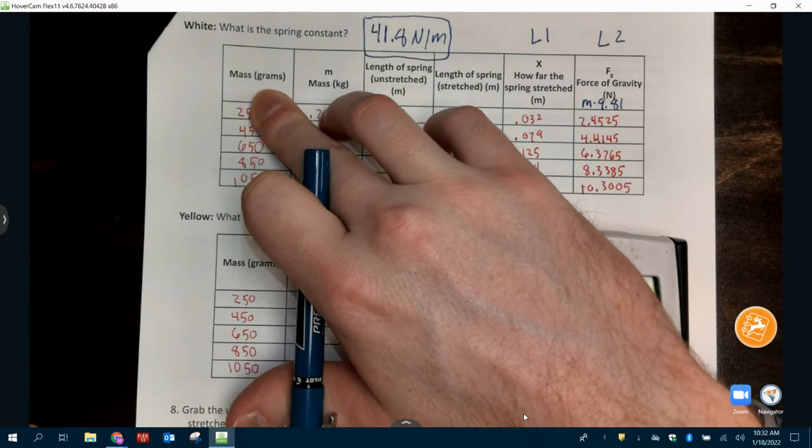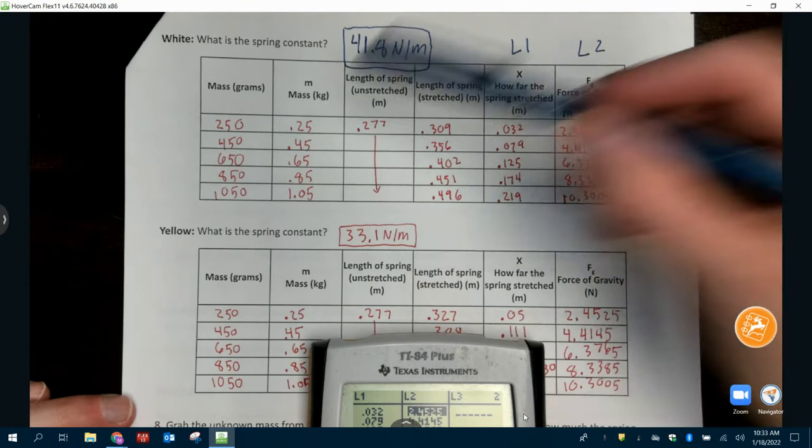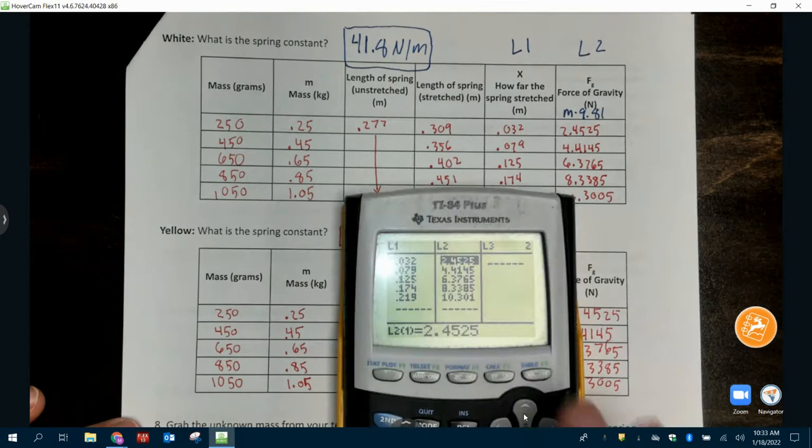Hi y'all. So, again, I'm using my example of white because white is the spring that I use for this down here. This is all the procedures that you need to be able to do. So again, in order to get this x, we subtracted these two numbers here. And then to get force of gravity, it was mass times 9.81. So this is my data set here.